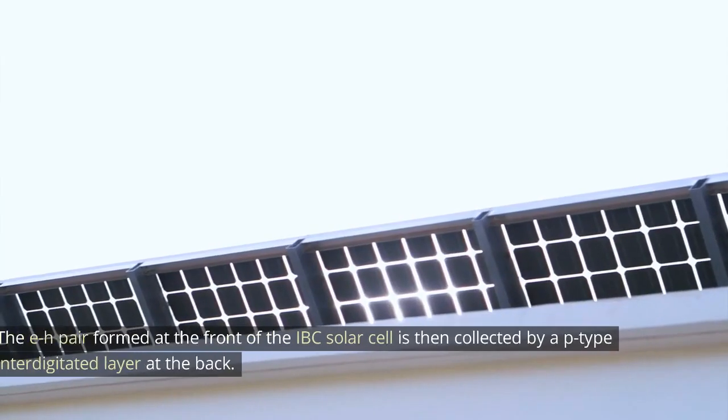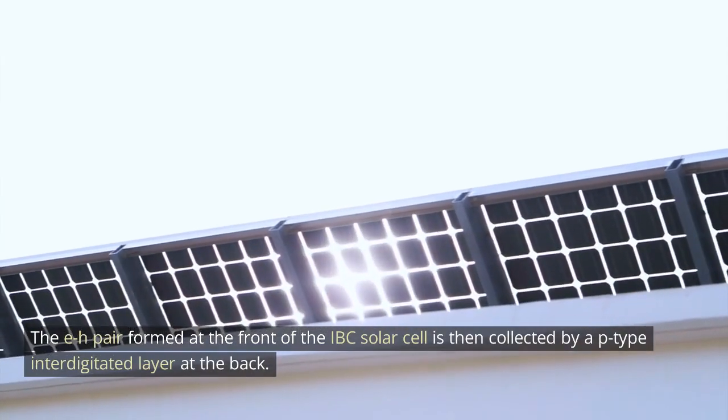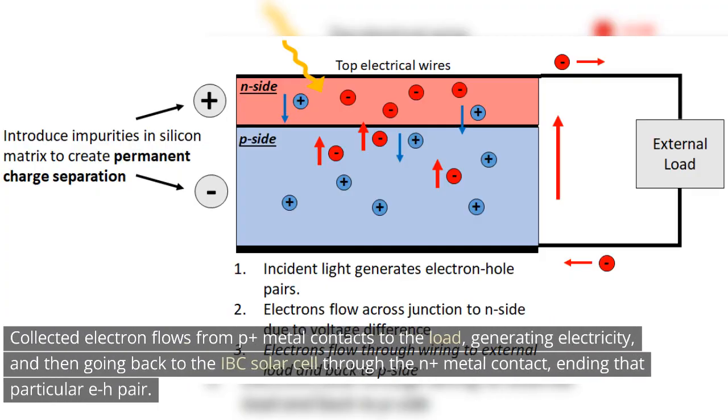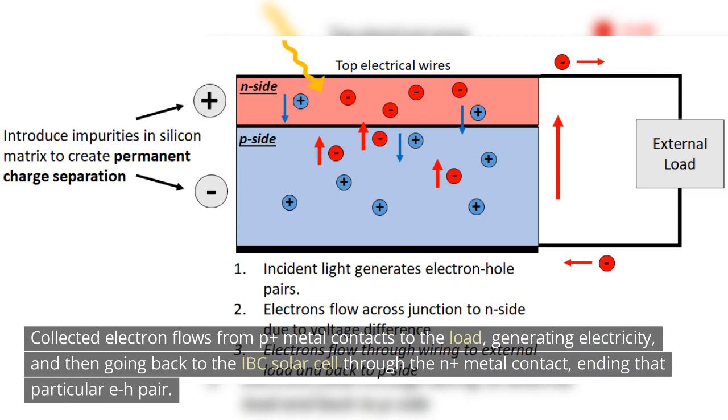The electron-hole pair formed at the front of the IBC solar cell is then collected by a p-type interdigitated layer at the back. Collected electrons flow from p+ metal contacts to the load, generating electricity, and then going back to the IBC solar cell through the n+ metal contact, ending that particular EH pair.